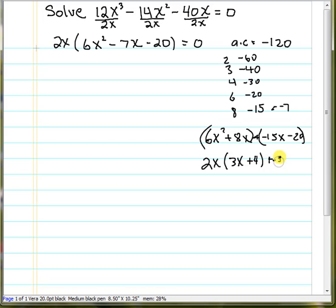and we're left with 3x plus 4. So our factors are 2x minus 5, and 3x plus 4. So if we take that back up here and write this in factored form, we now have three factors.